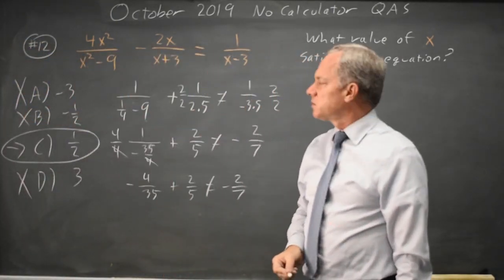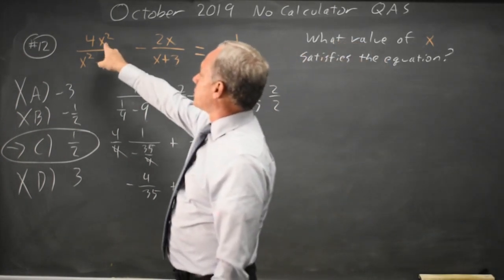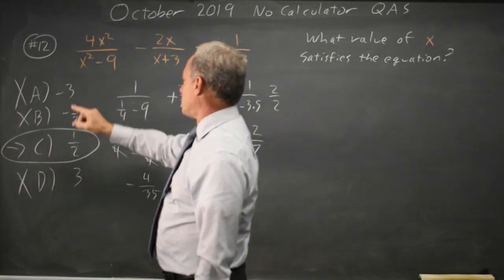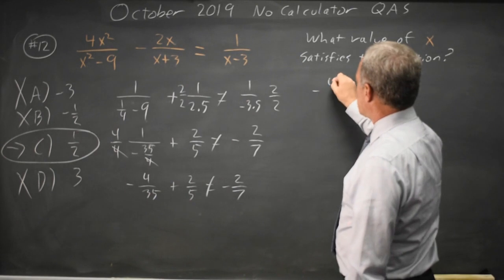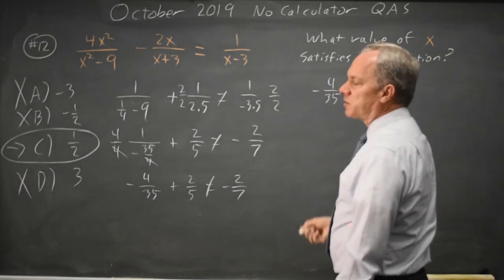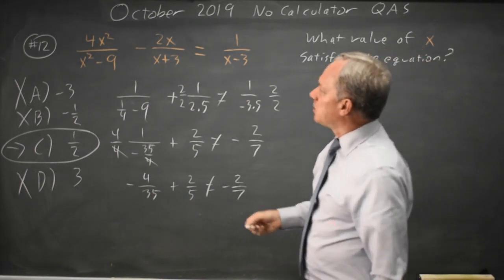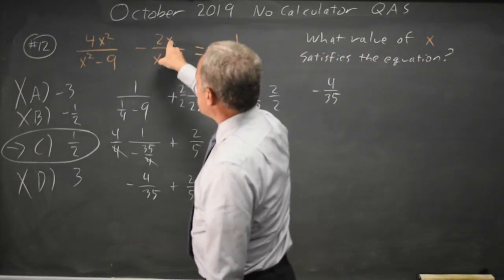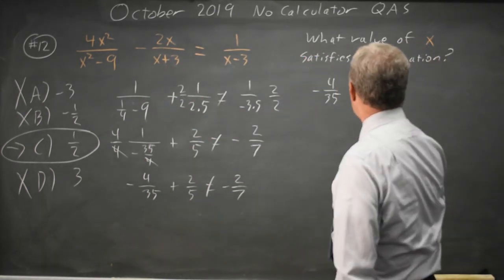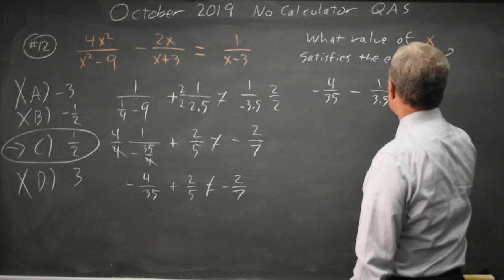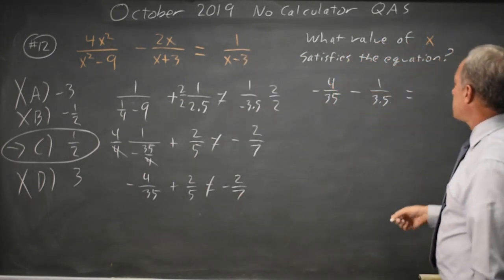Let's actually substitute C in and verify that. The first fraction will be the same. 1 half squared is 1 fourth in both cases, so I know that's negative 4 over 35. Minus 2 halves is minus 1 over 1 half plus 3 is 3.5 equals 1 over 1 half minus 3 is 1 over negative 2.5.